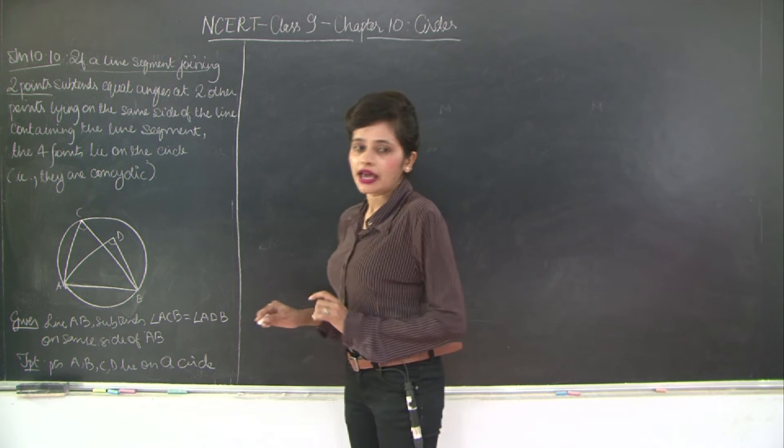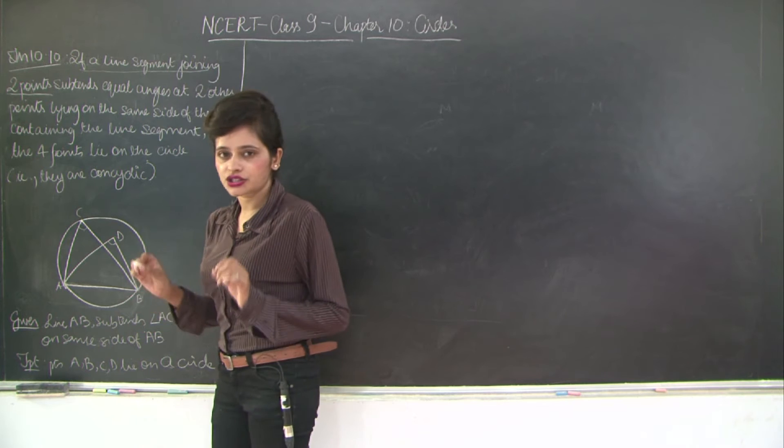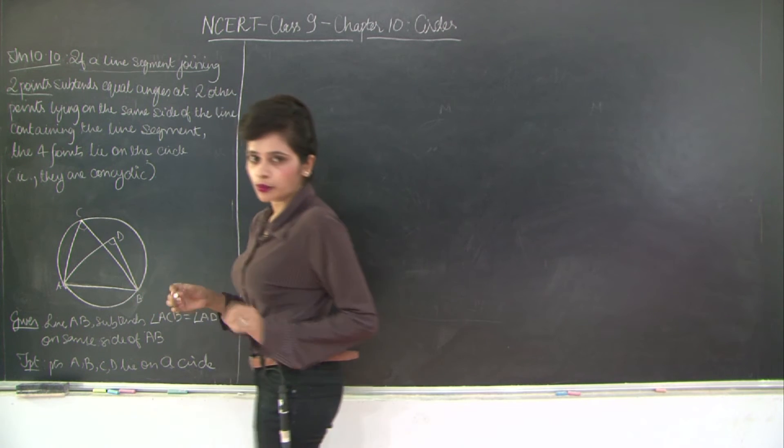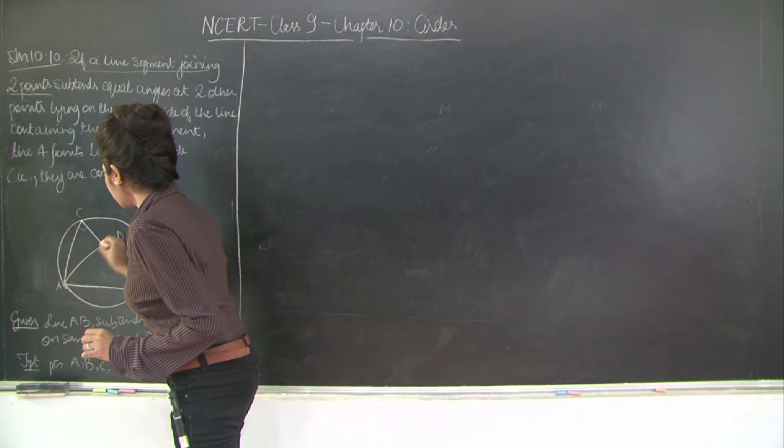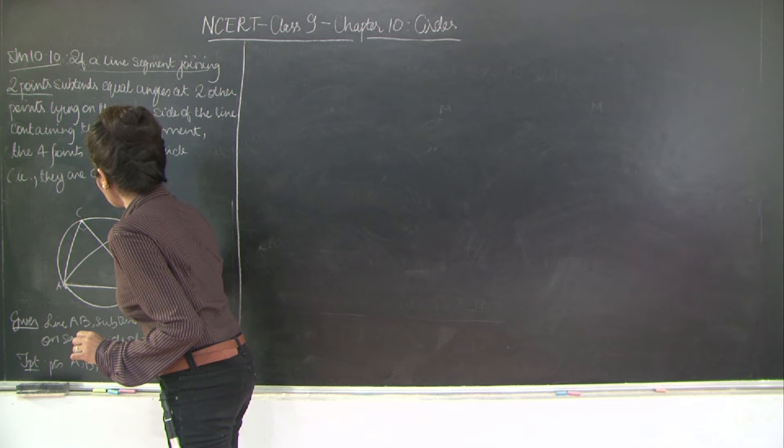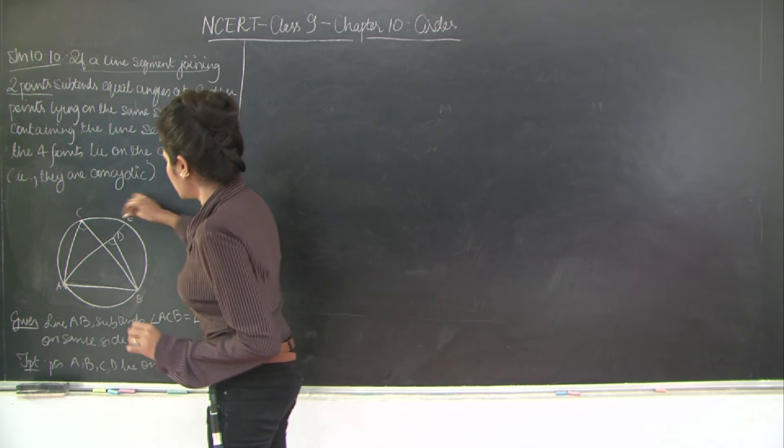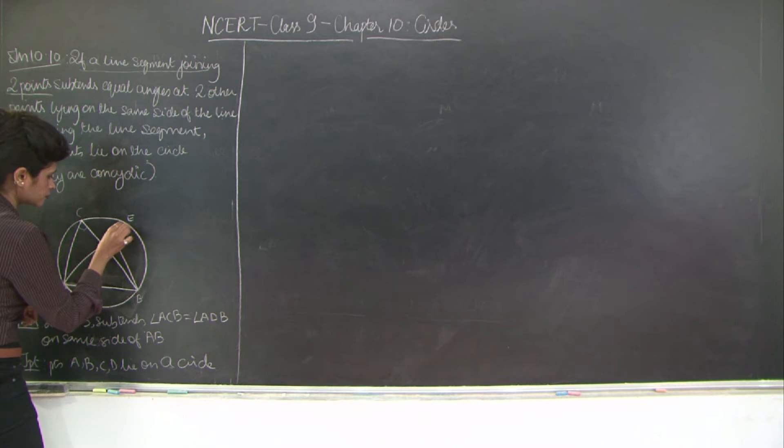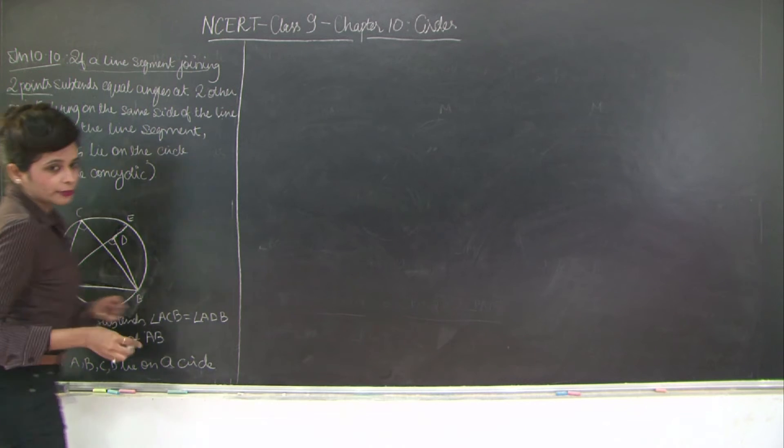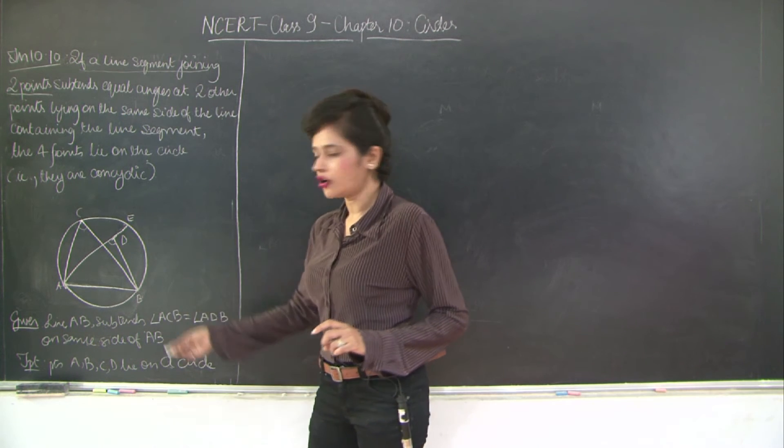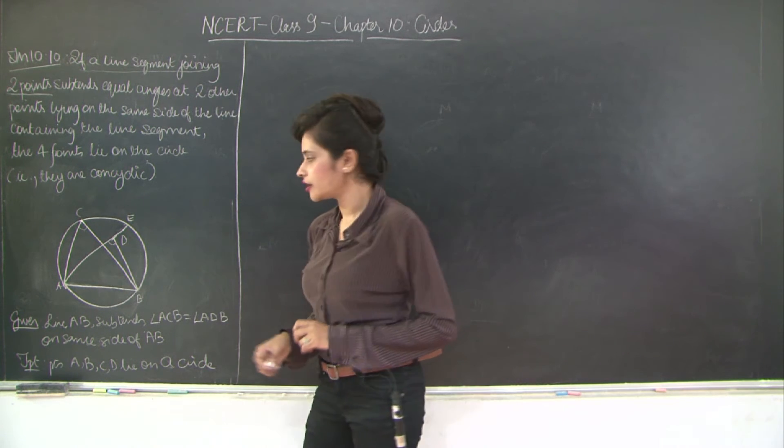So now you have a circle passing through points A, C and B, these three points being non-collinear. So now since D is not lying on, let's assume that D does not lie on the circle. So what we are going to do is, that means if I extend A, D to a point E, then this line segment A, E.